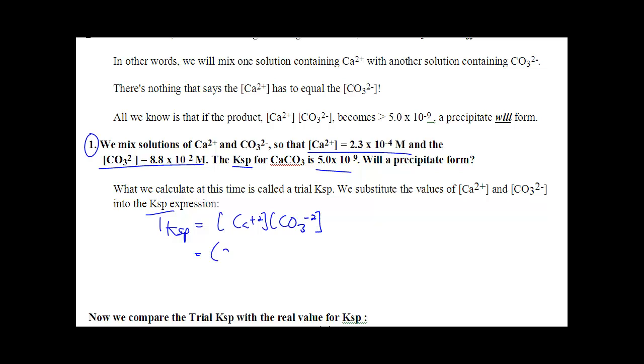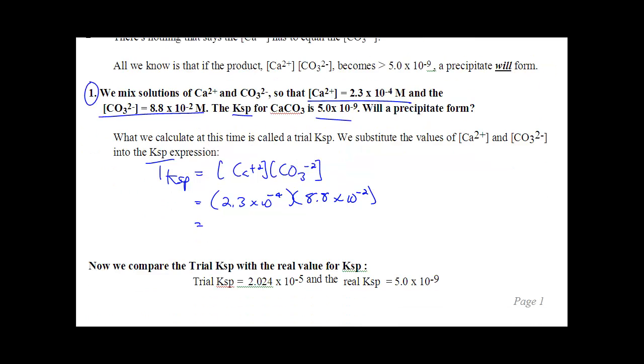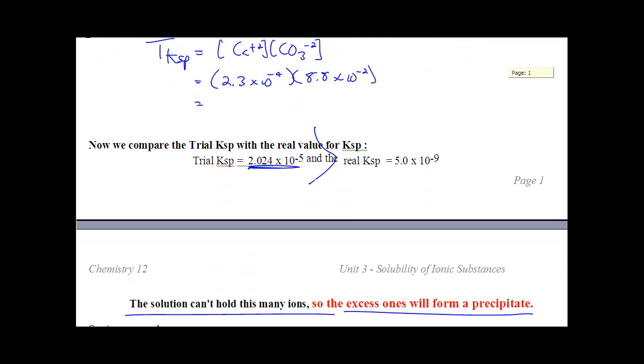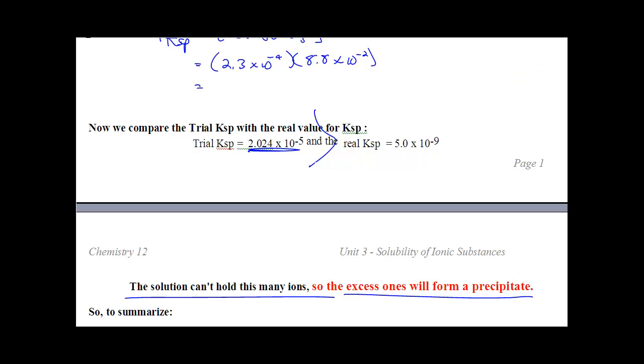You plug in those numbers, 2.3 times 10 to the negative 4 times 8.8 times 10 to the negative 2, and you are going to get 2.0 times 10 to the negative 5. This number is much larger than the real one. This means that there is enough ions to saturate that solution. Those concentrations are large enough to reach equilibrium. So the answer is, will a precipitate form? Yes, a precipitate is going to form because you have more than enough ions.